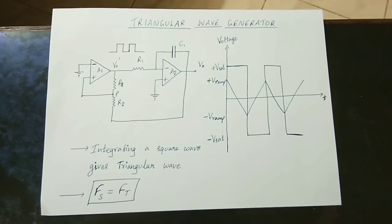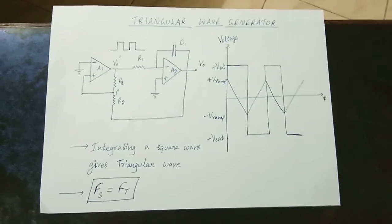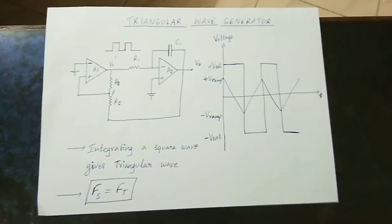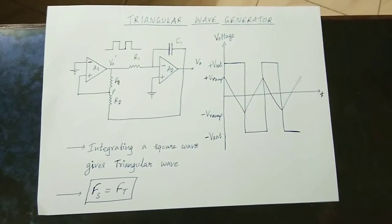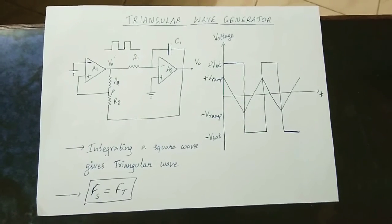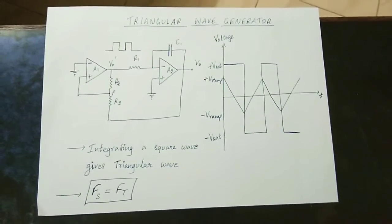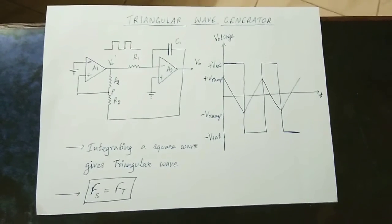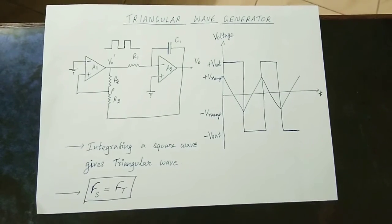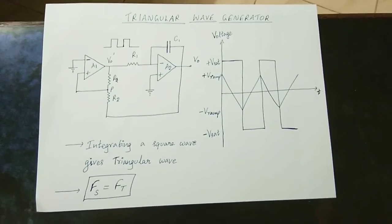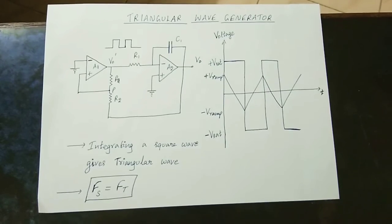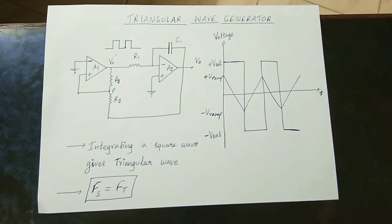We are going to talk about the triangular wave generator. In this video, we will talk about the astable multivibrator and the monostable multivibrator. The astable multivibrator produces a square wave, and the monostable produces a rectangular waveform.